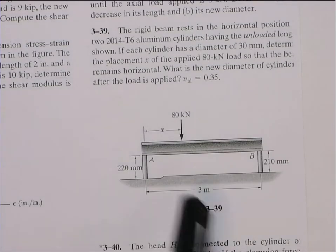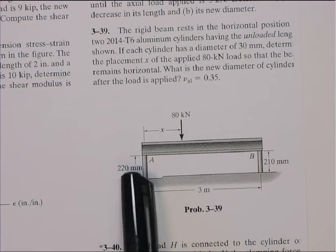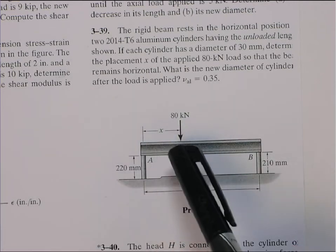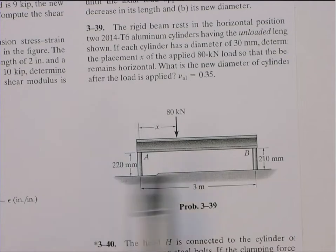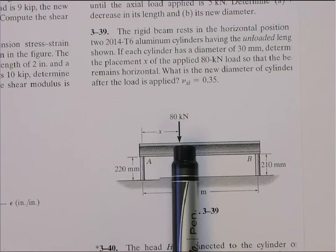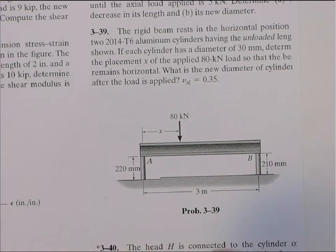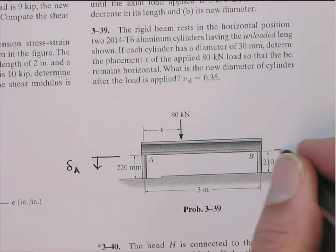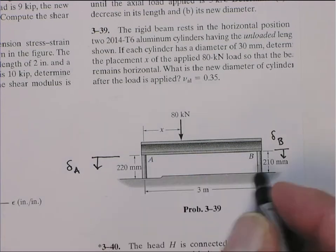So what the problem is asking for here is, here's a rigid beam supported by two rods, A and B, at A and B. They have different lengths. Here's a fixed force, but it's put at an undetermined distance. Now, depending upon where the force is located, you're going to get different reaction forces at A and B. What they want you to do is find the location of the reaction force X such that this beam remains horizontal.